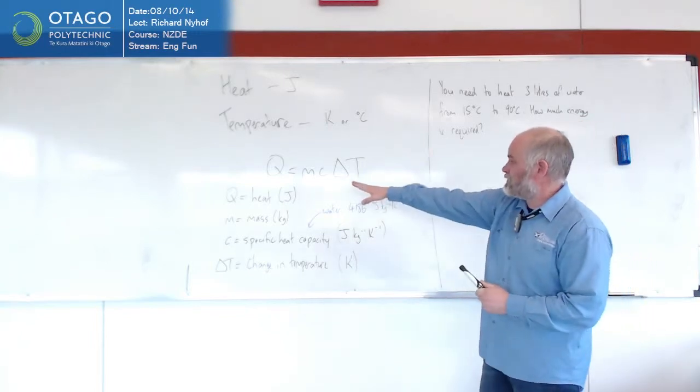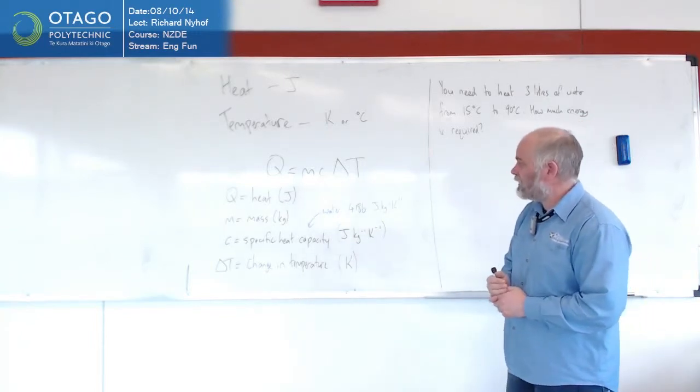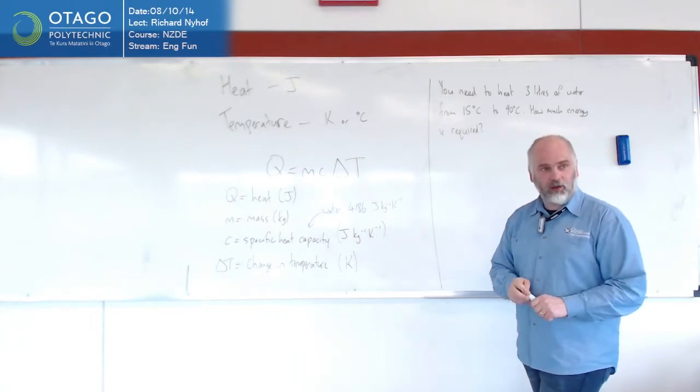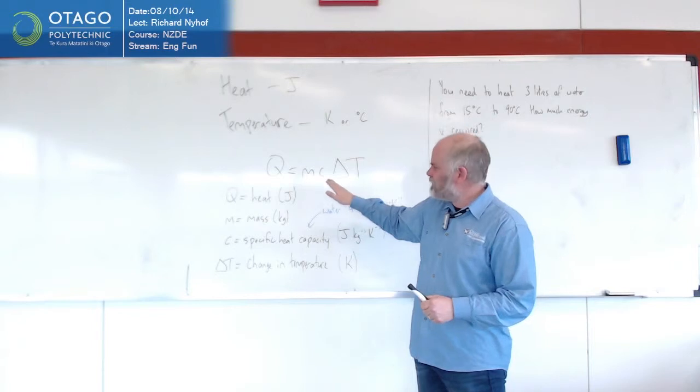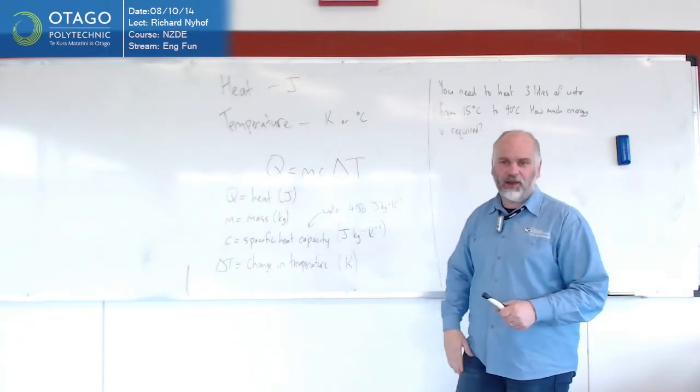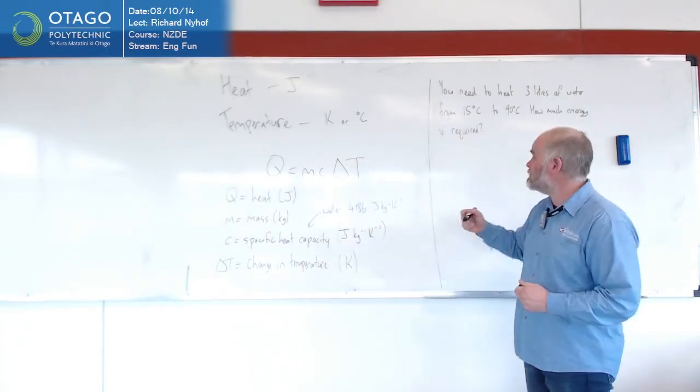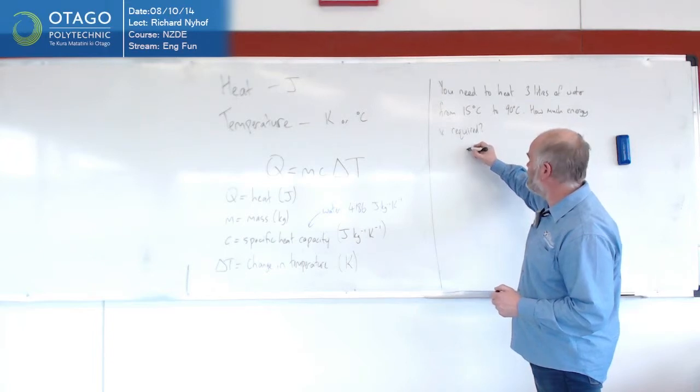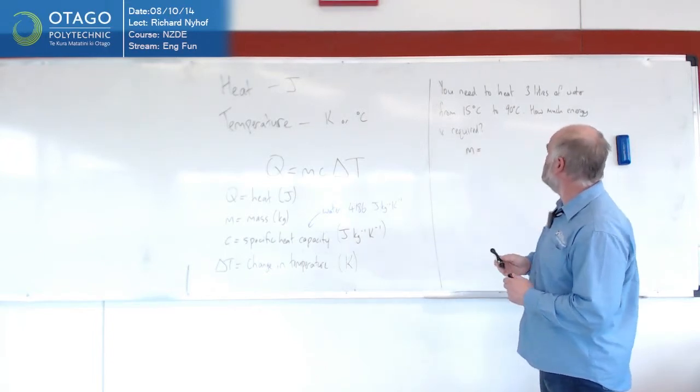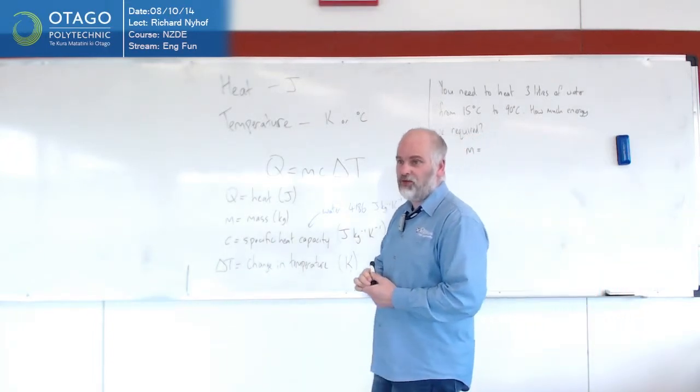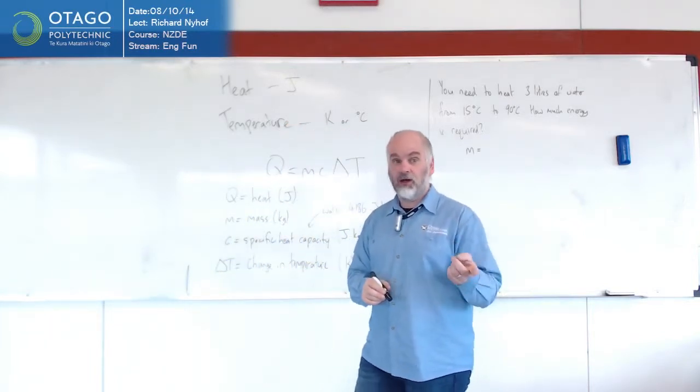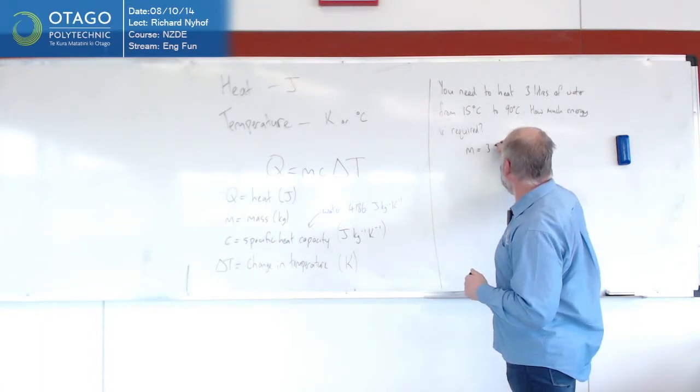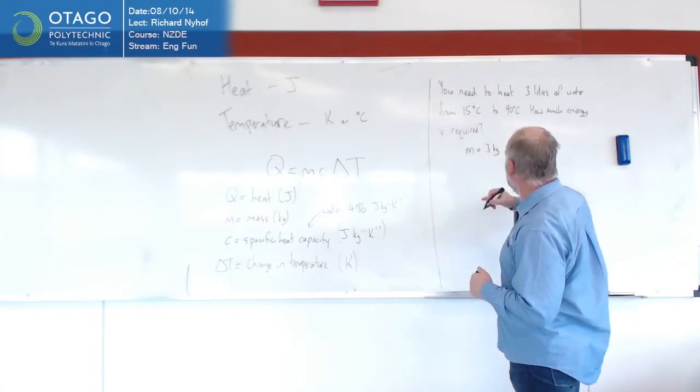We're going to use this formula, Q equals MC delta T. To drive that formula, we need to know what M, C, and delta T are, and then we'll be able to whack them into that formula and get an answer. What have we got? We've got the mass in this case. What's the mass going to be? Three kilograms, because one litre of water is a kilogram. So the mass is three kilograms.